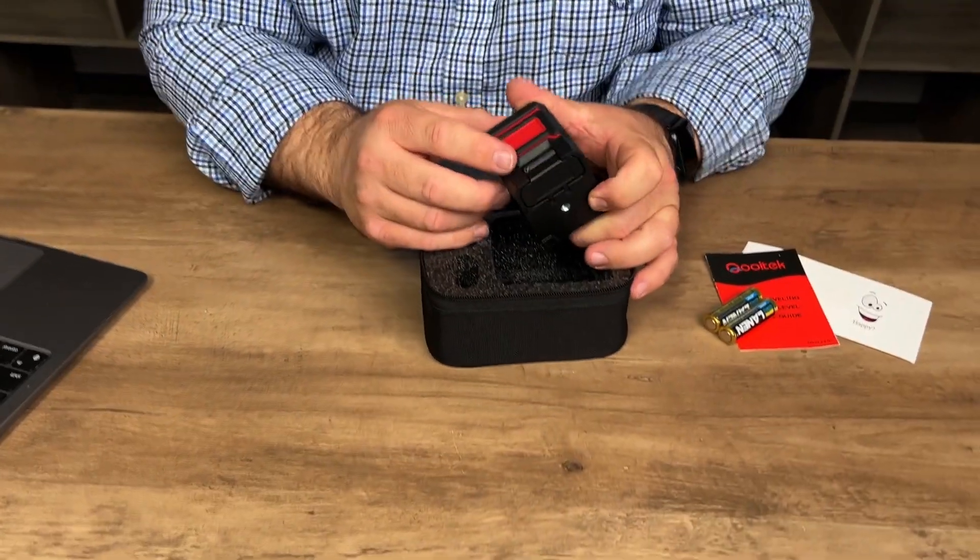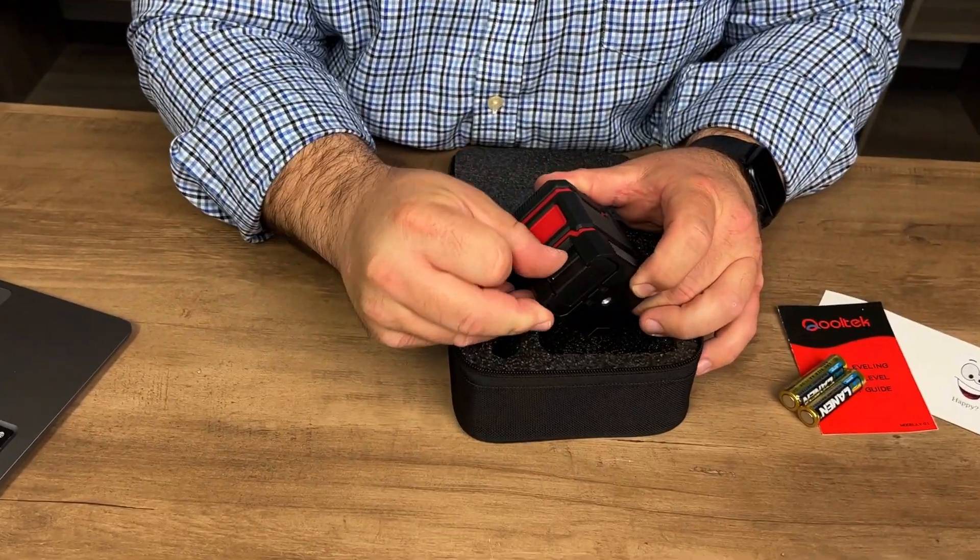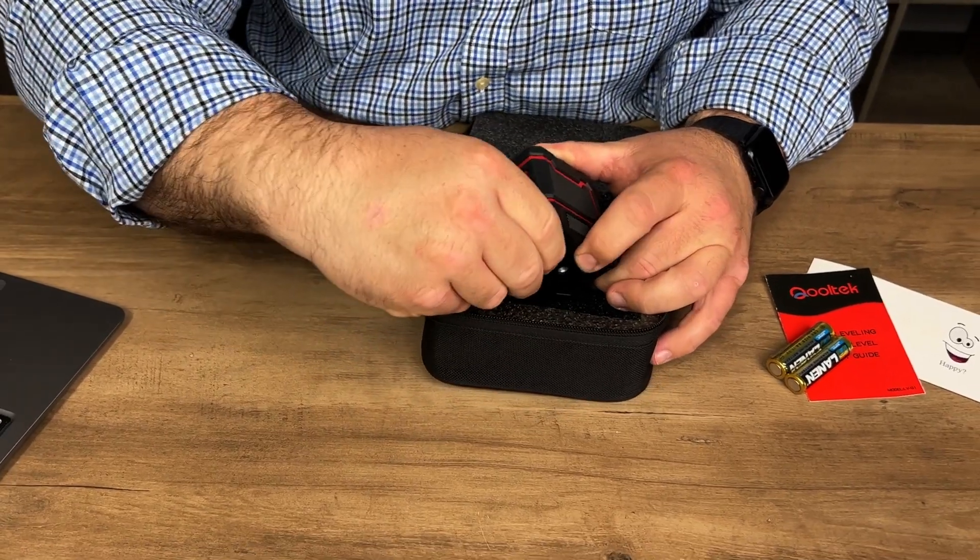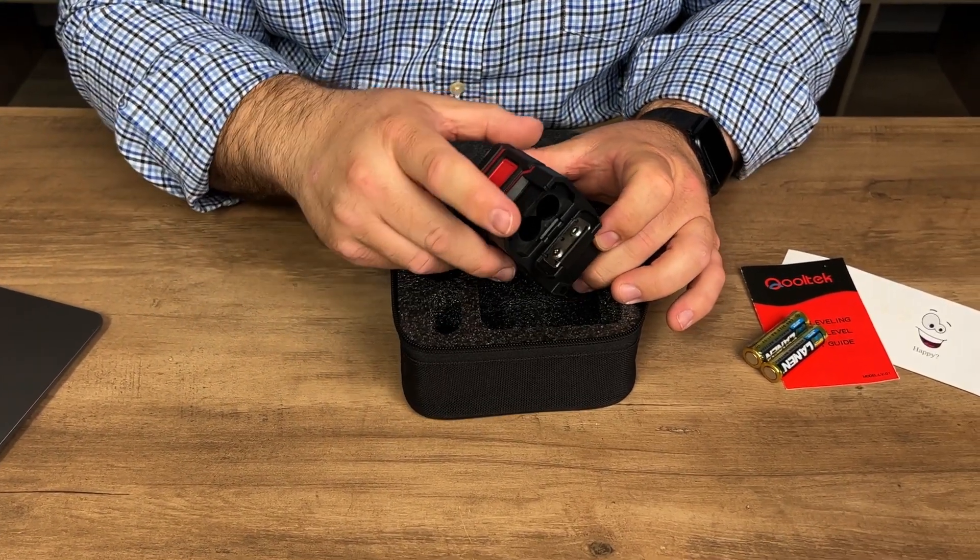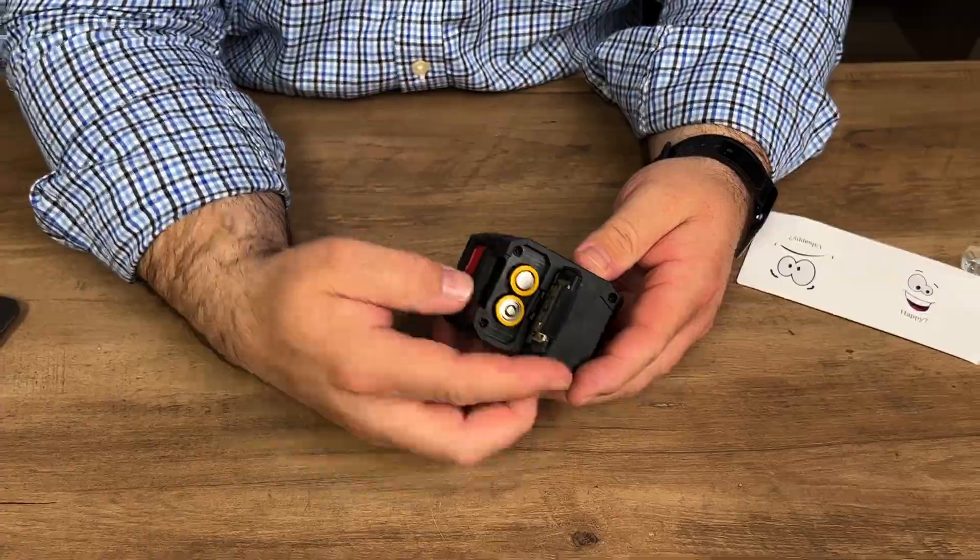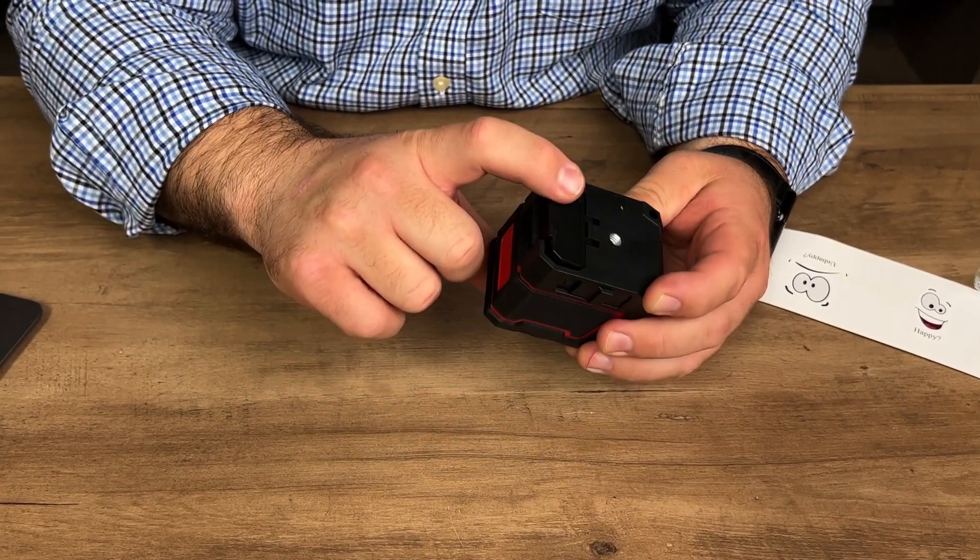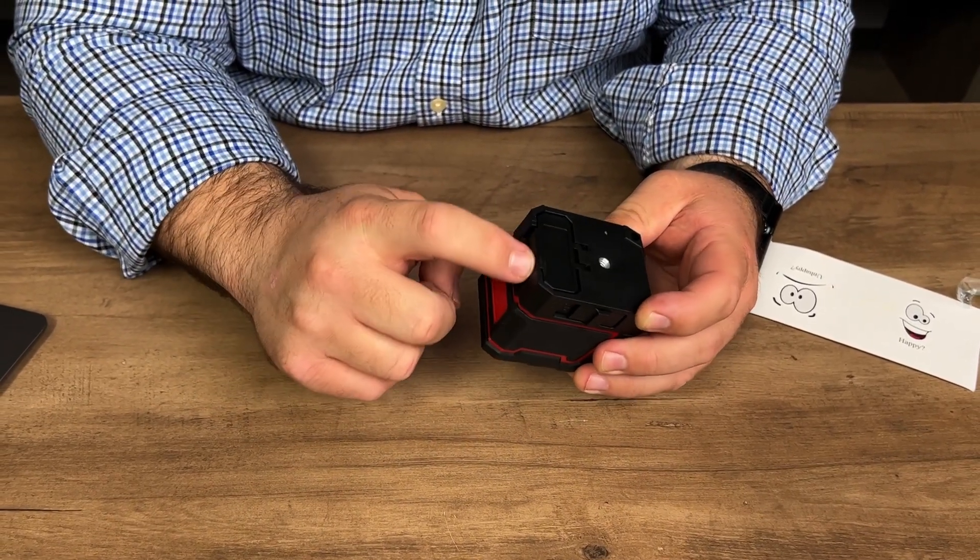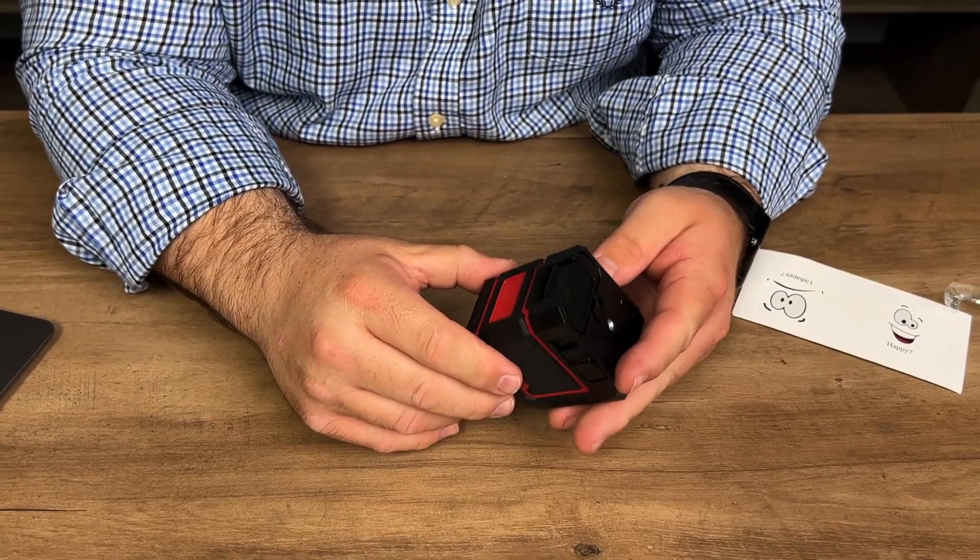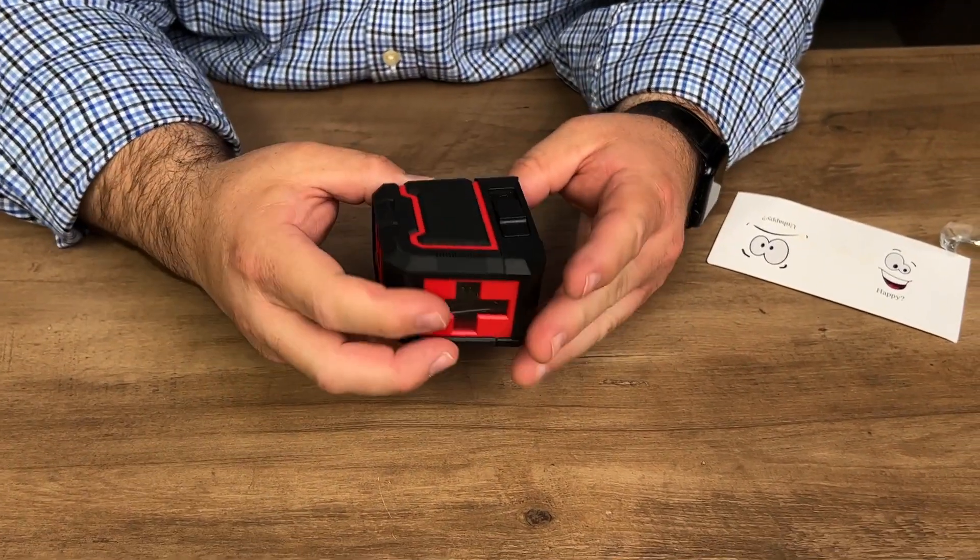The battery compartment is here on the bottom. You open it up by this latch here. So we'll open up the battery compartment and get the batteries installed. With the batteries installed, go ahead and close this. And it has a nice click there to let you know that it is closed. I love something that clicks like that.